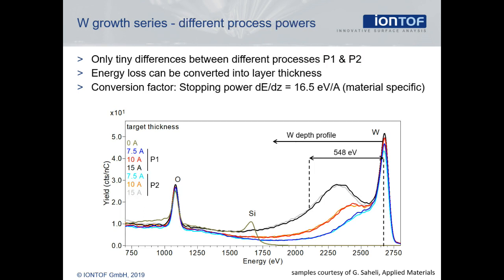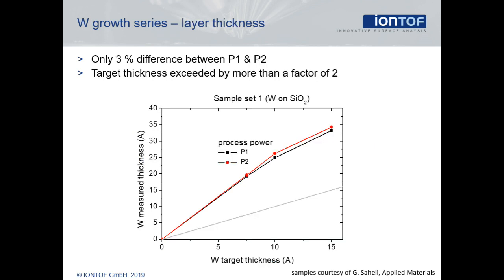Comparing the samples from the two different process conditions, only a small difference is detected — the in-depth signals almost overlap. By determining the width of the in-depth signal, the film thickness can be derived and plotted for both sets of samples. Both sets of samples have significantly thicker films than the nominal values indicated by the grey line, but the difference between the corresponding samples of the two sets is very small. This demonstrates the sensitivity of LEIS for small variations in layer thickness.